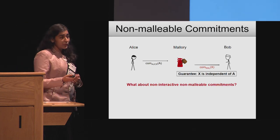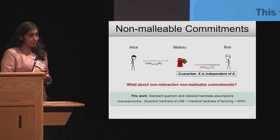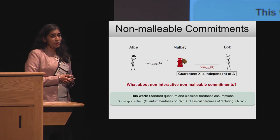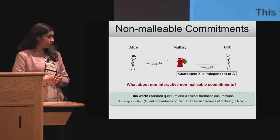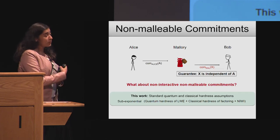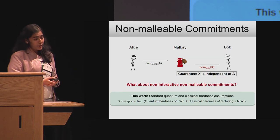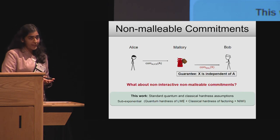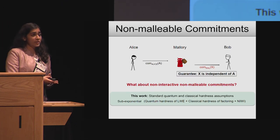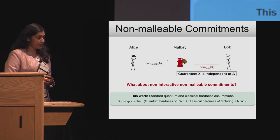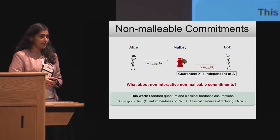The work I'm going to talk about today answers this question partially, and says that one can assume well-studied standard quantum and classical hardness assumptions and sub-exponential versions of those assumptions. Specifically, we rely on quantum hardness of LWE and classical hardness of factoring and non-interactive witness indistinguishable proofs, and show that if you assume sub-exponential hardness of all of these primitives, then non-interactive non-malleable commitments are possible.